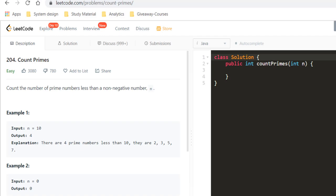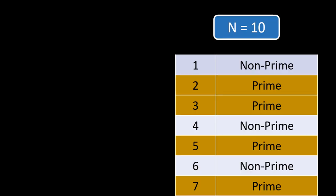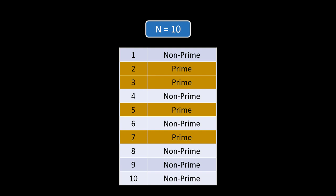Suppose we are given n as 10. We can see that 1 is a non-prime, 2 is a prime number, 3 is also a prime number, 4 is a non-prime because 4 is divisible by 2 and 1. 5 is a prime number, 6 is divisible by 2, 3, and 1, so it's a non-prime. 7 is a prime number, and 8, 9, and 10 are non-primes. So within 1 to 10 we have 4 prime numbers.